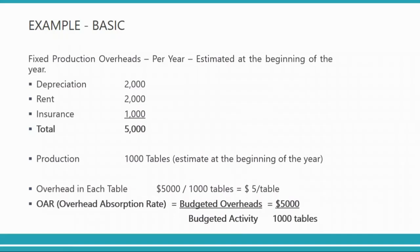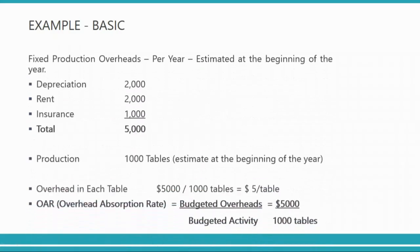Usually you do not calculate output in terms of units because in one factory you don't make just one product. You make different products — tables, small tables, big tables, doors, windows. When you make different types of products you cannot simply calculate five dollars per table because there are many different types of products.